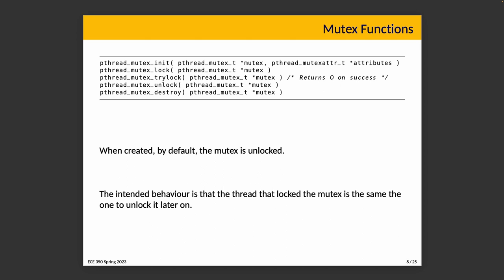Some tools like Helgrind will warn you if you tried to unlock an already-unlocked mutex, and hopefully that helps you track down the error. But you only know that if you run with Helgrind and check return values, so you do have to be at least a little bit mindful of this.